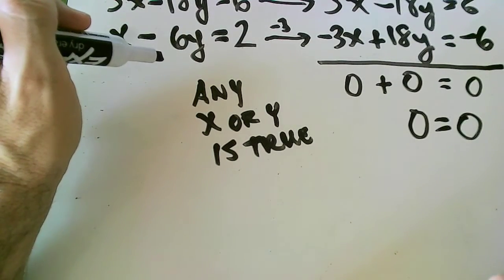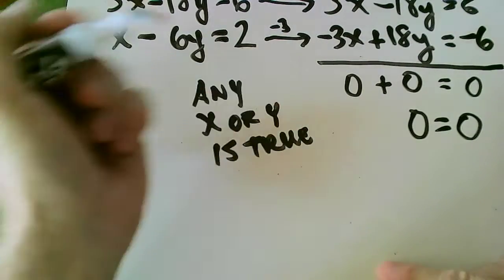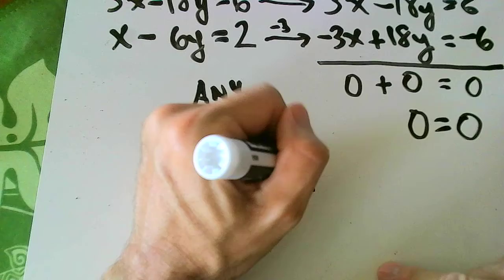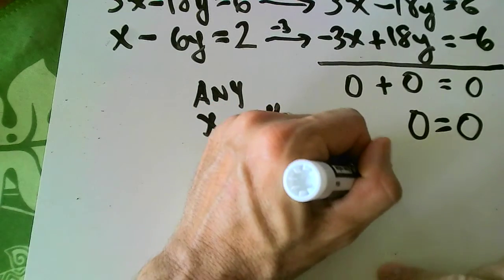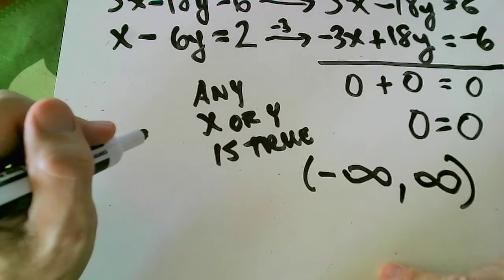So normally your teacher might ask you, what's the solution set? Well, the solution set is going to be all real numbers. And in interval notation, that would be negative infinity to infinity. Any solution is true because they're the same line.